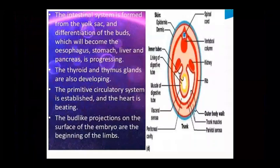The intestinal system develops from the yolk sac through differentiation. These gut structures later develop into the esophagus, stomach, liver, and pancreas. The thyroid and thymus glands also form during this period. The primitive circulatory system is established, and the heart begins to beat.